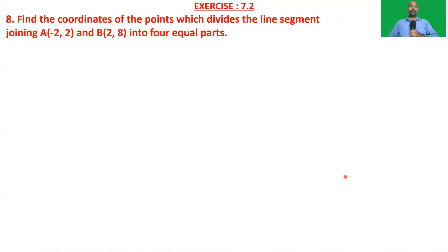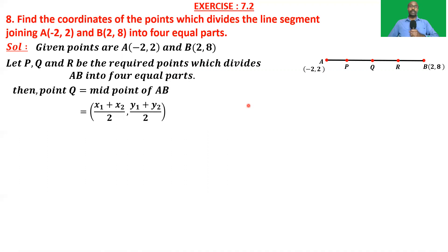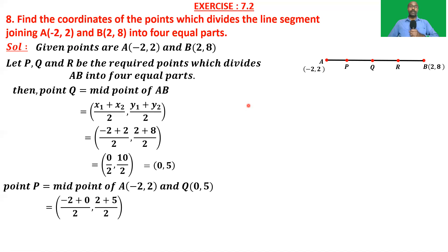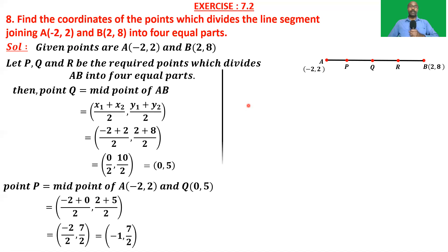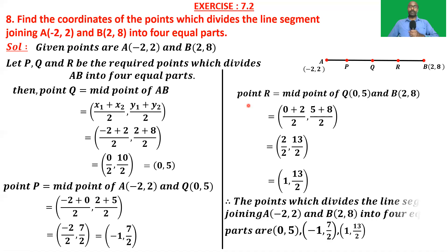The next problem: find the coordinates of points which divide the line segment joining A(-2, 2) and B(2, 8) into four equal parts. This is the same type as the previous problem, so I'm just presenting the answers. The first point is (0, 5), the second point is (-1, 7/2), and the third point is (1, 13/2).